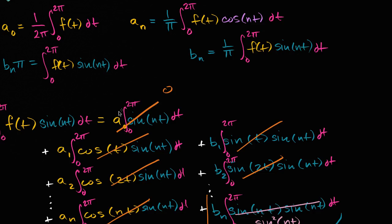That was pretty straightforward, now that we knew these properties of integrals — how to evaluate definite integrals of cosine or sine, or products of cosines and sines. Using these three formulas, we can now attempt to find the Fourier expansion — the Fourier series — and find the coefficients for our square wave.